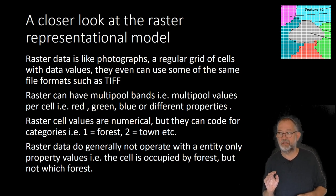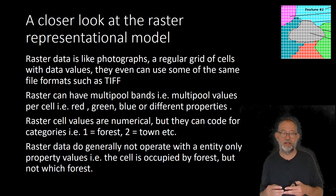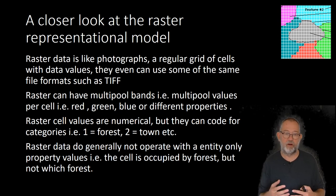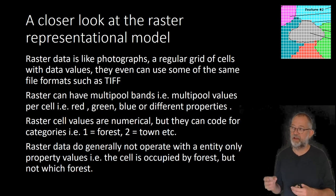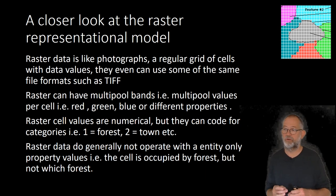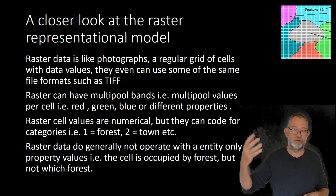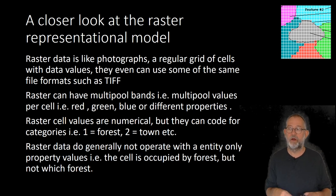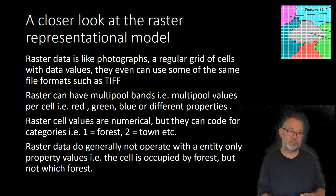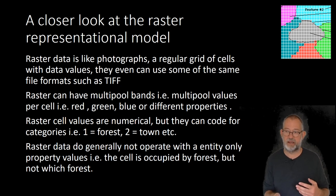One thing about rasters is that cells can't overlap — you can't have two cells at the same location. So it's difficult to do things like mapping forest fires where you can have overlapping property values. In that case, you would have to have multiple layers, one for each year for instance, or use other techniques. In general, rasters can't be used for that type of data.